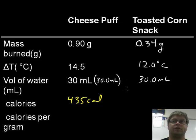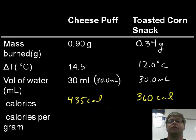Now we can do the same thing for the toasted corn snack. We take its volume of water times the temperature change, and we get 360 calories. So now if you look at these two numbers, you say, okay, which one has the most calories? Well, it's obviously the cheese puff. The cheese puff's got more calories than the toasted corn side, so that makes the cheese puff better. However, we know, wait, we used more cheese snacks. So if we use more cheese snacks, of course you're going to produce more energy. We don't have the same mass here, so we have to account for that mass difference.